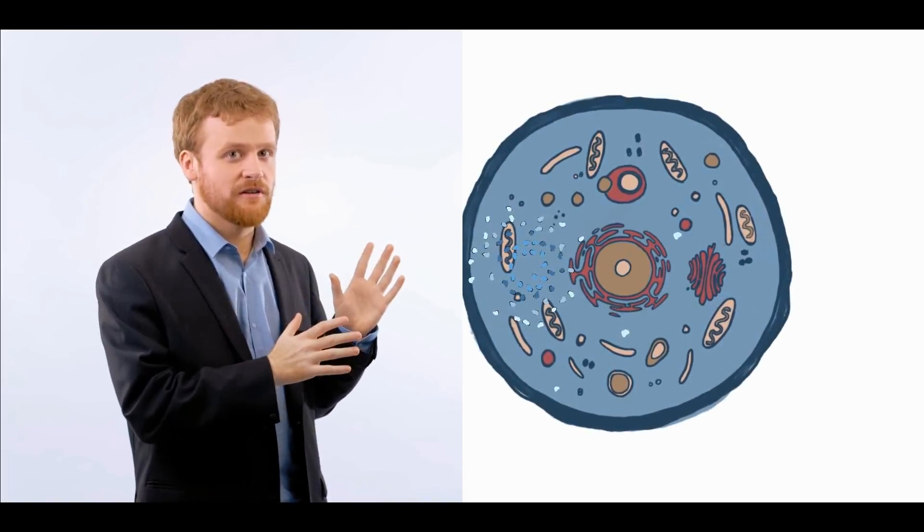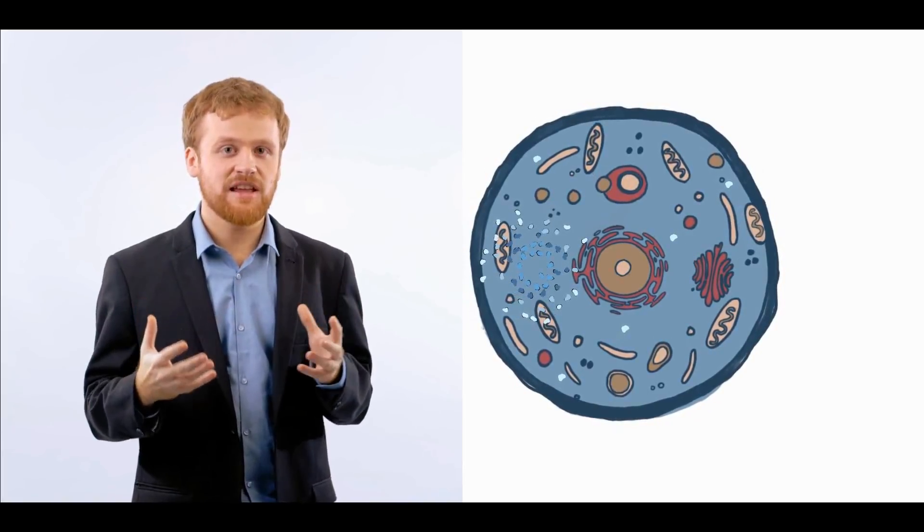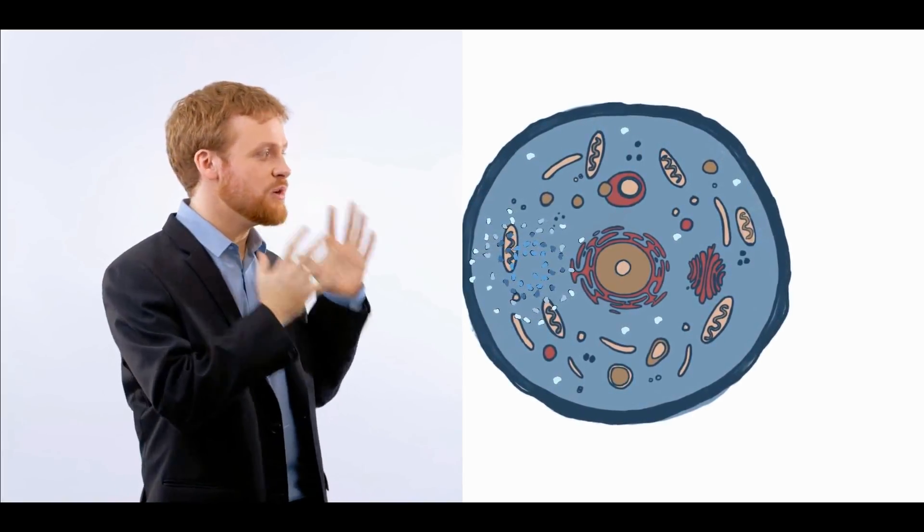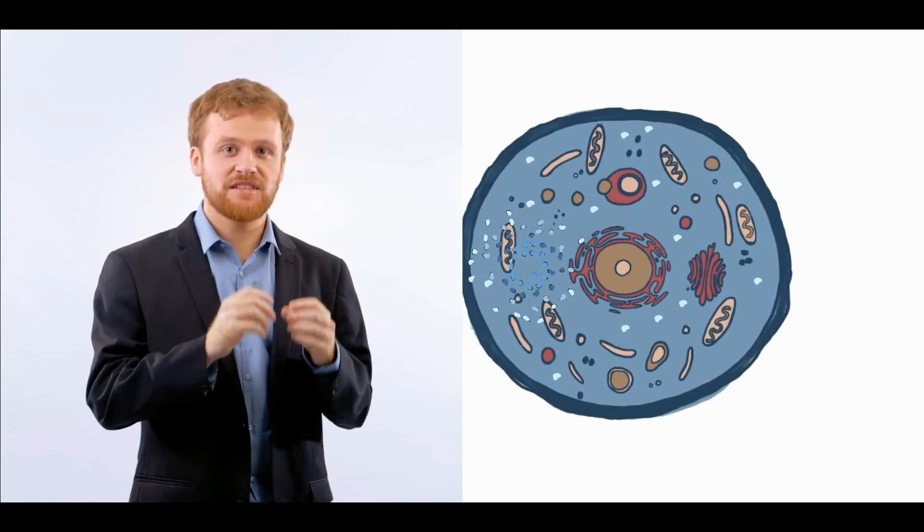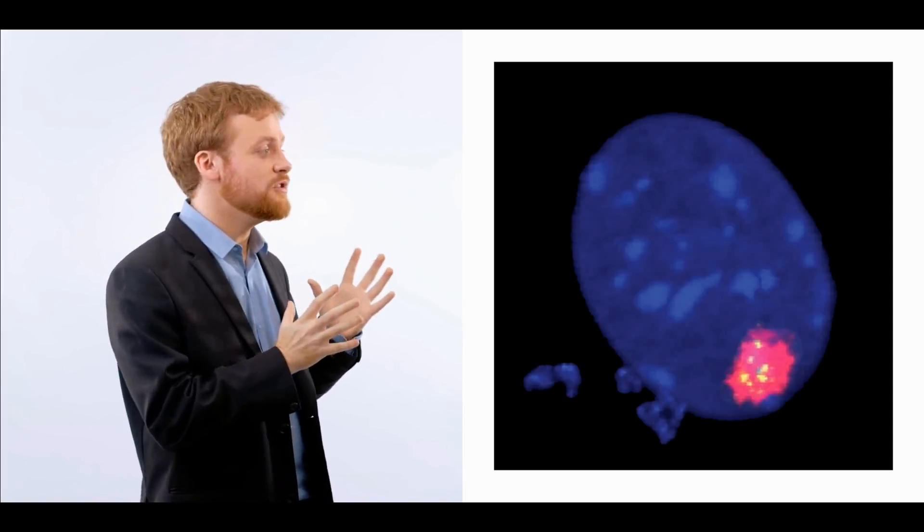Copied pieces of the virus start appearing inside of the cell, because the cell's reproductive machinery is mistaking certain parts of the virus for parts of the cell. Here's an infected cell that's uncontrollably reproducing virus proteins highlighted in pink.